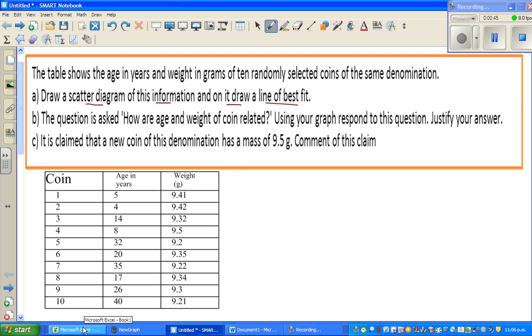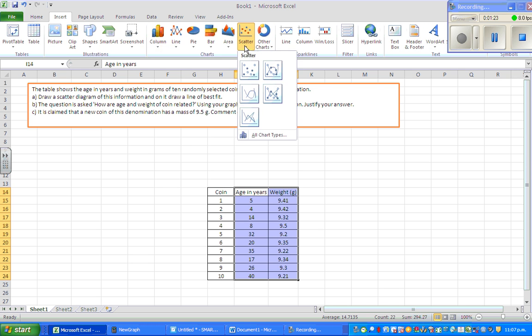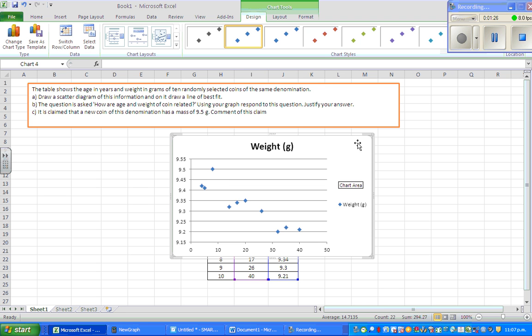So first I'll show on Excel and then on a graphic calculator. So this is the same question and this is the information in age. So if you want to draw this in Excel, you highlight age and weight. So we are finding a relationship between age in years and the weight in grams. So then you go to insert and then go to scattergraph and graph this. And this is your graph, scattergraph.